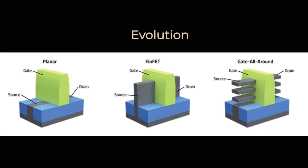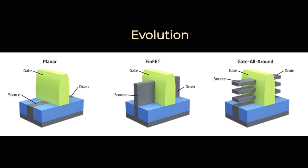Planar transistors for many years was the dominant design of a transistor. Up to 22 nanometers, it was everything we basically did. With the shrinkage of the process, planar transistors had to be replaced with something different because of the issue with the current control.